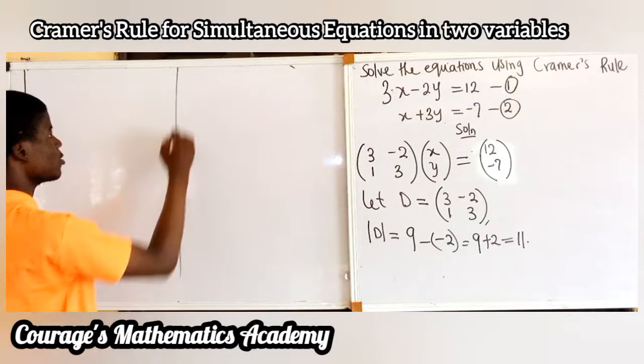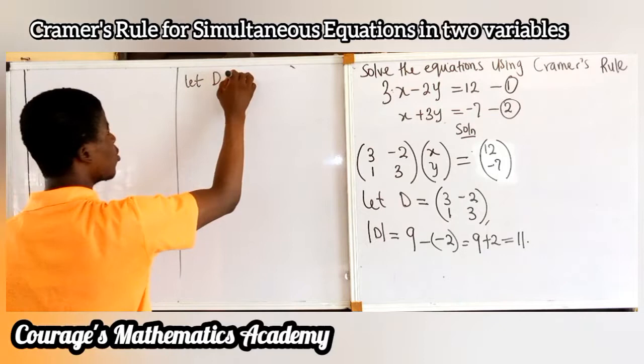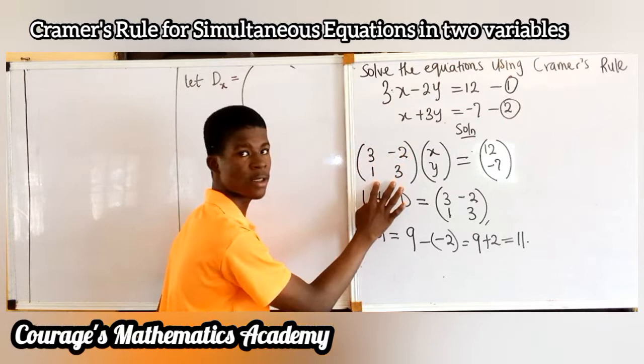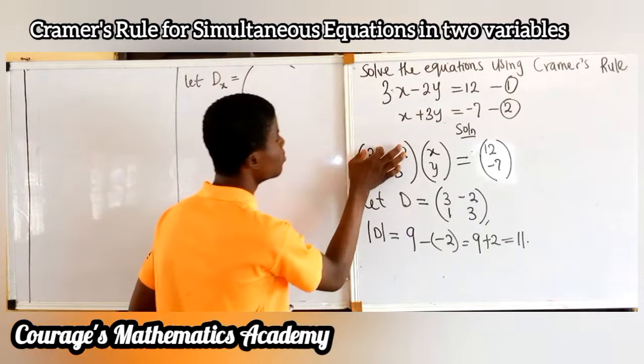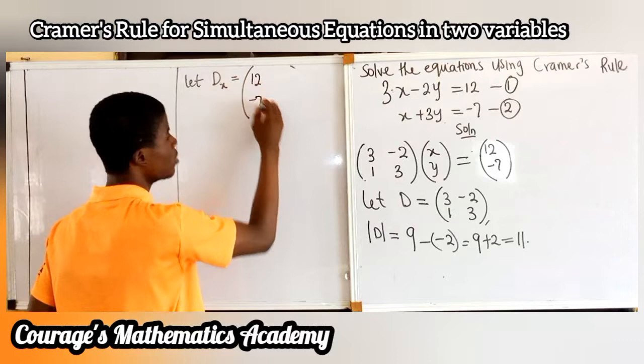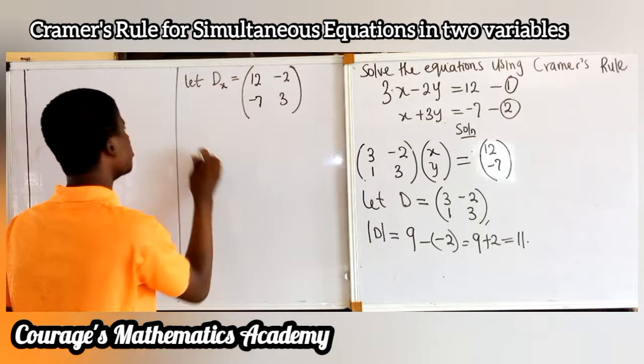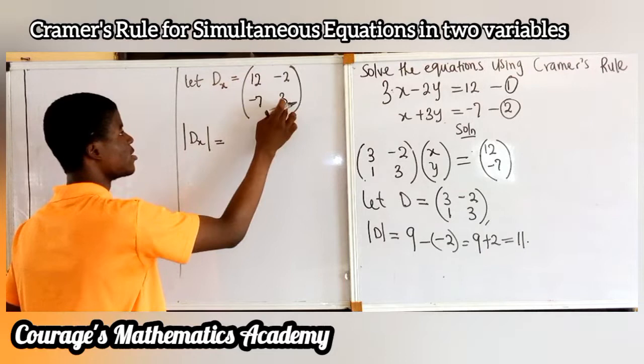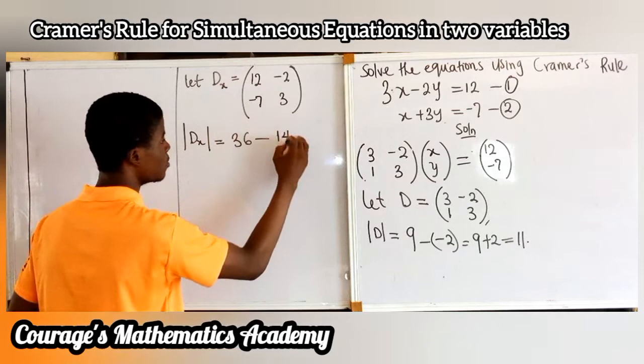Now let Dx, that's D substitute x, be equal to the matrix. This is the column for x. To get Dx, we will substitute the constant column — 12 and minus 7 — in place of the x column. So I have 12, minus 7, then y column remains: minus 2, 3. The determinant of Dx: 12 times 3 is 36, minus minus 7 times minus 2 is plus 14. So 36 minus 14 gives me 22.